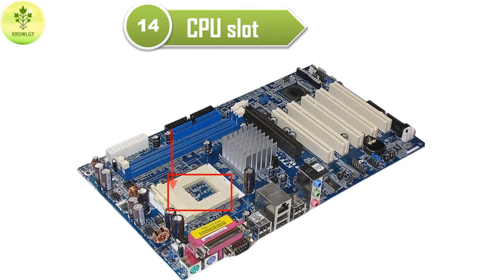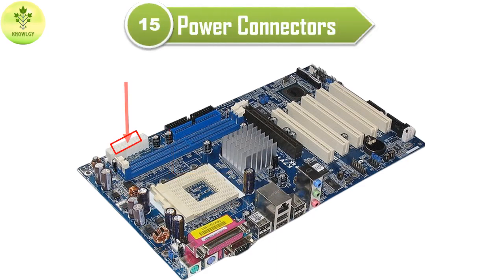Now this one is the CPU slot. The CPU slot connects the central processing unit to the computer system motherboard. And this one is a power connector. This power connector supplies power to the motherboard. The main power connector is typically a 24-pin ATX connector, and there may be additional connectors for CPU power.